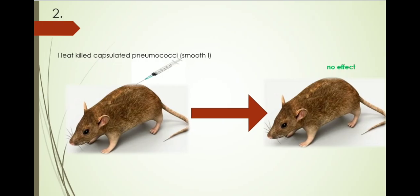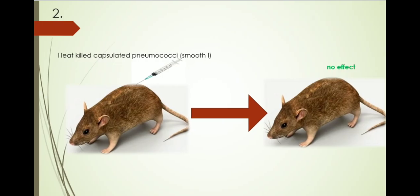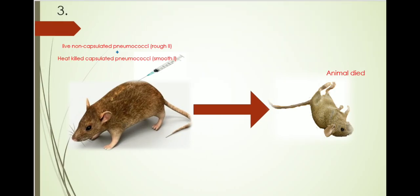Next, when he killed capsulated pneumococci, i.e., smooth type 1, and inoculated it, the mice was not affected and the animal survived.